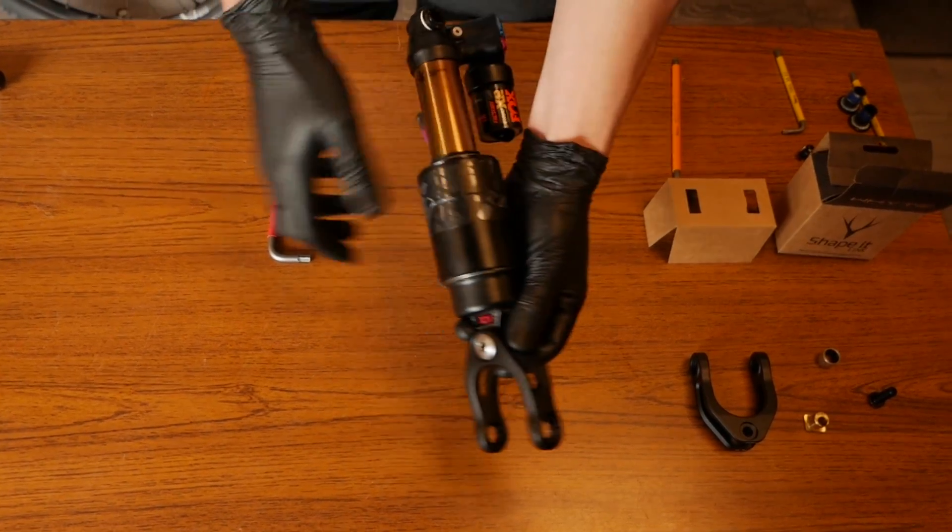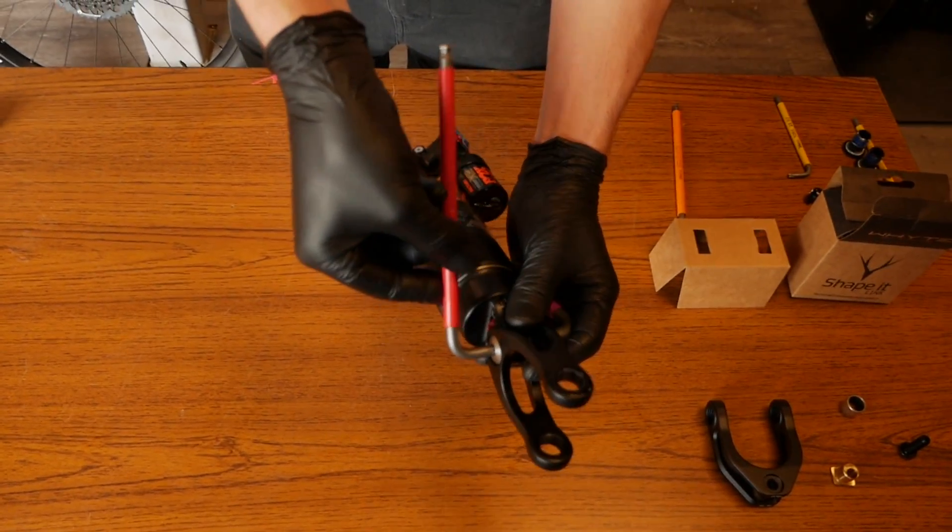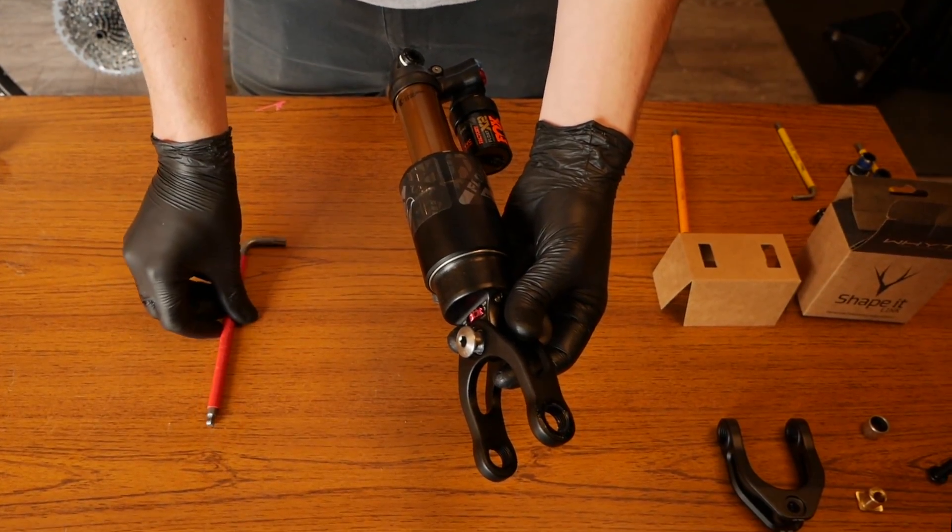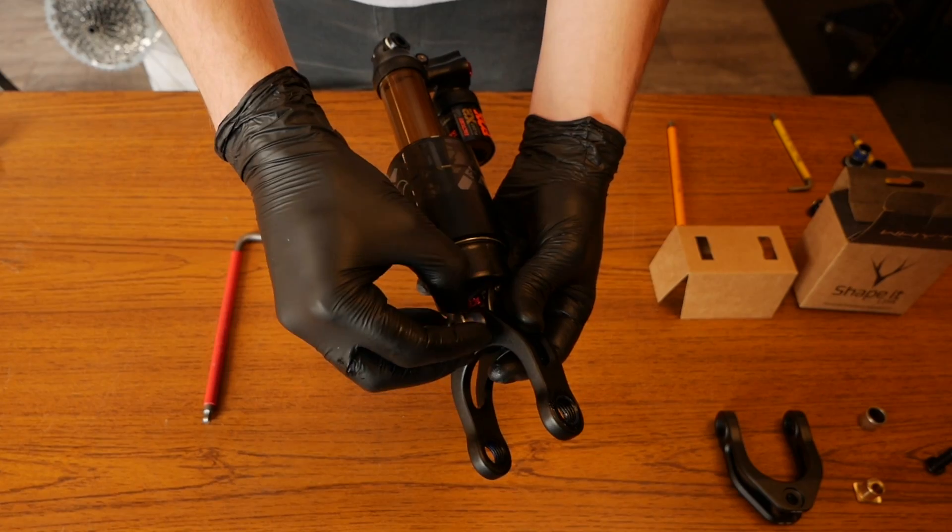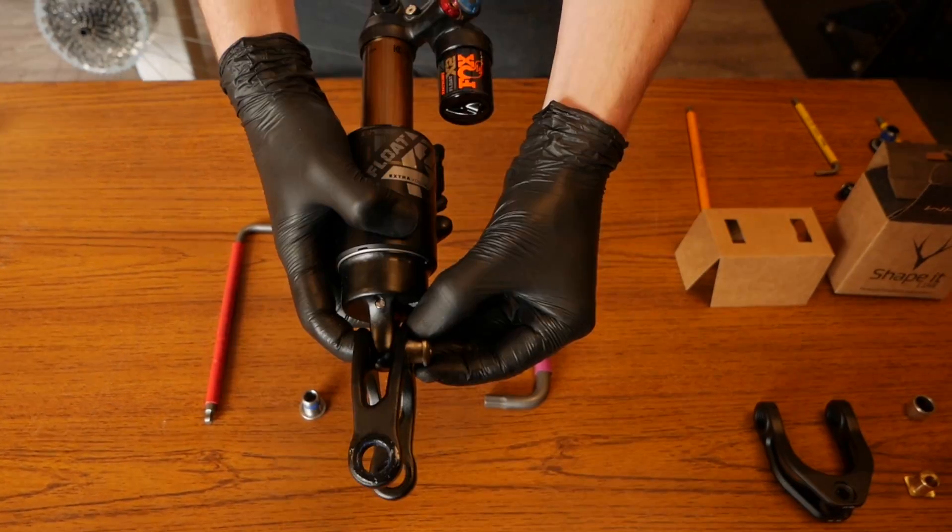Taking your 8mm and 6mm allen key, remove the shock extender bolt. Then remove the extender from the shock. Keep the link and washer safe if you ever wish to refit in the future.